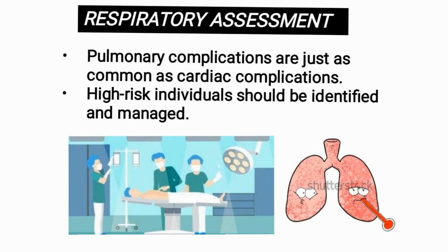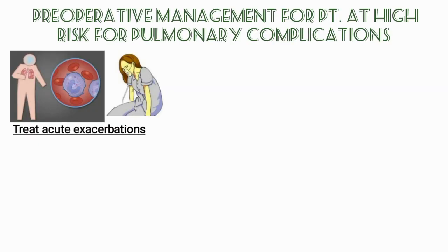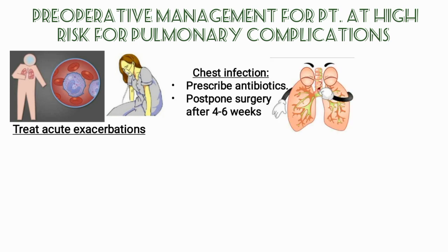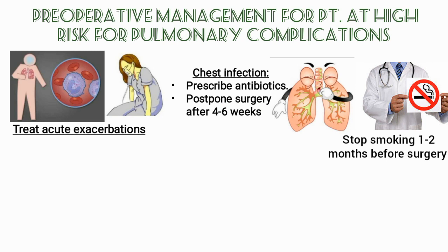Moving on to respiratory assessment — pulmonary complications are just as common as cardiac complications, so individuals at risk should be identified and managed. Acute exacerbations of COPD or asthma should be treated first and surgery performed later. If the patient has a chest infection, surgery should be rescheduled four to six weeks after starting antibiotics.